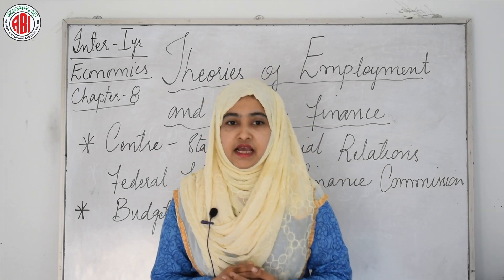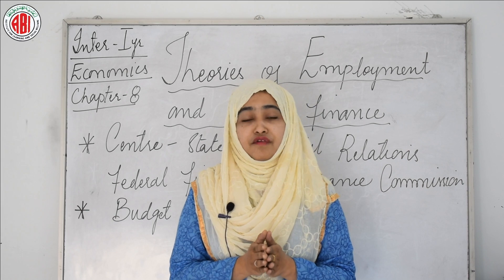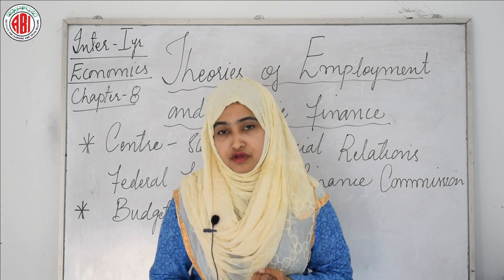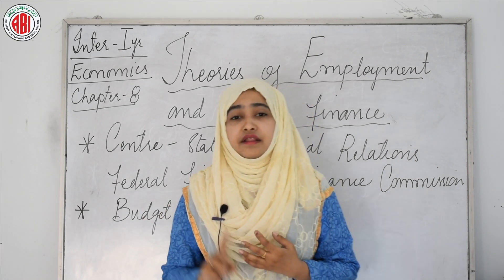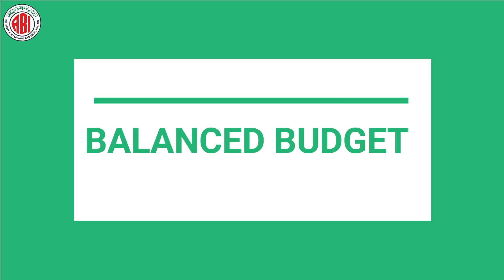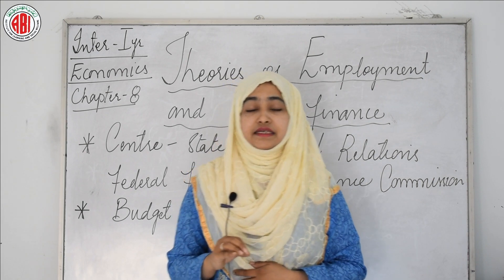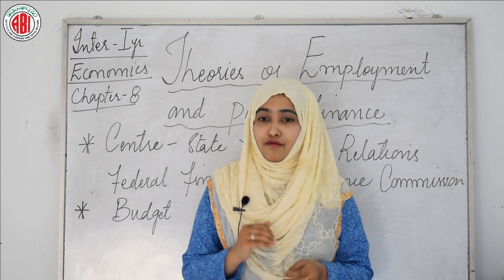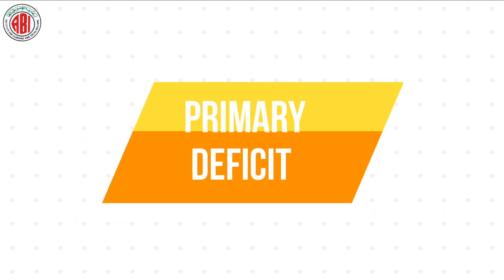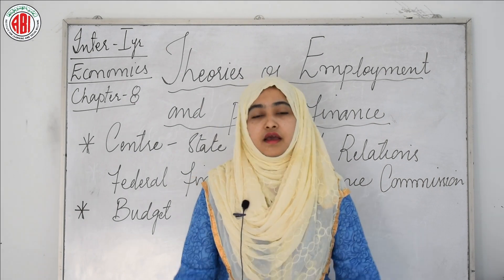Now the components and types of budget. The budget consists of both receipts (income) and expenditure of the government. The budget of the Government of India consists of two main components: budget receipts and budget expenditure. There are three types of budget based on the difference between receipts and expenditure: surplus budget, deficit budget, and balanced budget. A budget deficit arises when total expenditure exceeds total receipts. There are four types of deficit: revenue deficit, budget deficit, primary deficit, and fiscal deficit. With this, Chapter 8 — Theories of Employment and Public Finance — is completed.